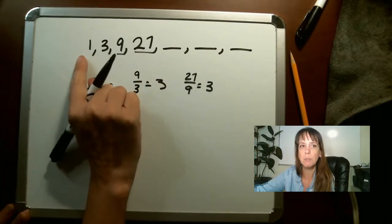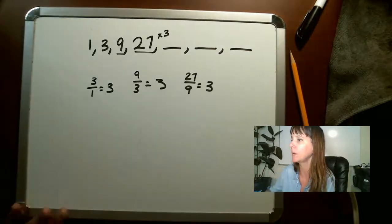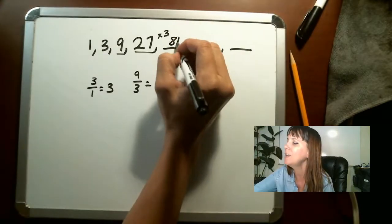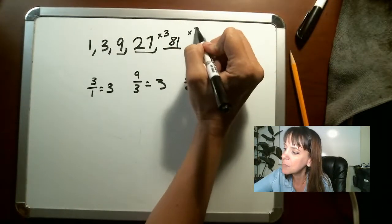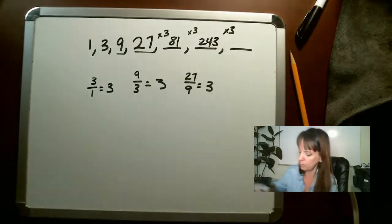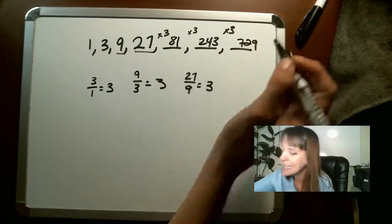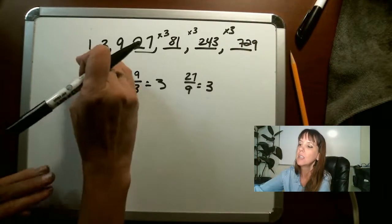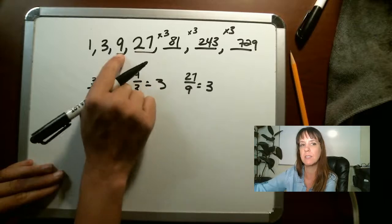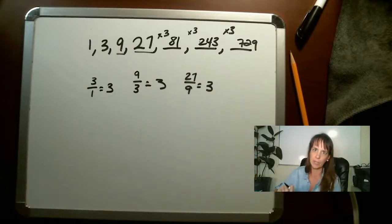So we're going to multiply by three. Twenty-seven times three gives us eighty-one. Then eighty-one times three gives us two hundred forty-three. Then two hundred forty-three times three gives us seven hundred twenty-nine. These are all powers of three. If you can't identify what the pattern is, try dividing each number by the previous one — if they all share three in common, then multiply by three.